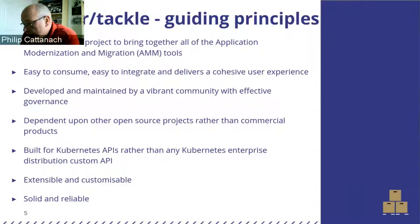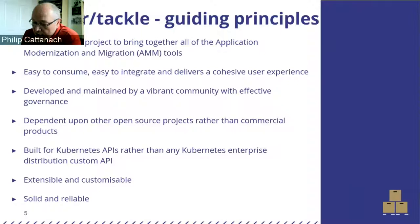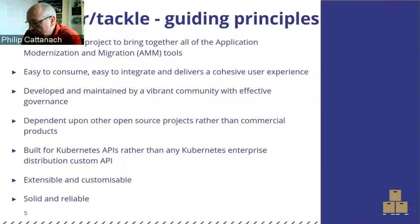We want to be dependent on other open source projects rather than any commercial products. For example, within Tackle we use the Keycloak open source project for authentication and authorization rather than the downstream Red Hat SSO. The tools will also be built for Kubernetes APIs rather than any specific Kubernetes enterprise distribution — so Kubernetes ingresses rather than OpenShift routes, Kubernetes catalogs for deploying applications rather than OpenShift templates. We expect them to be extensible, customizable, solid, and reliable with extensive unit tests and integration tests.